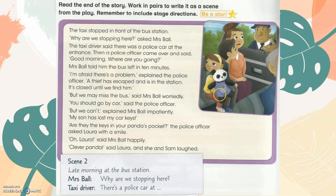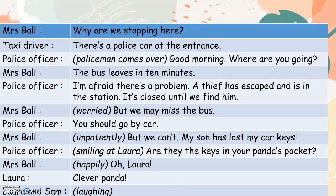Now written as a play script. Mrs. Ball: Why are we stopping here? Taxi driver: There's a police car at the entrance to the station. Police officer: Good morning. Where are you going? Mrs. Ball: The bus leaves in ten minutes. Police officer: I'm afraid there's a problem. A thief has escaped and is in the station. It's closed until we find him. Mrs. Ball: But we may miss the bus. Police officer: You should go by car. Mrs. Ball: But we can't. My son has lost my car keys. Police officer: Are they the keys in your panda's pocket? Mrs. Ball: Oh, Laura! Laura: Clever panda! (Ha ha ha ha ha!)